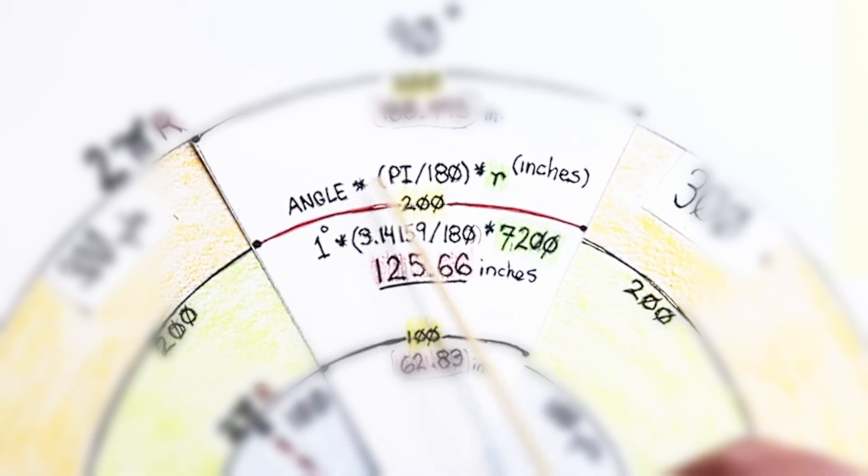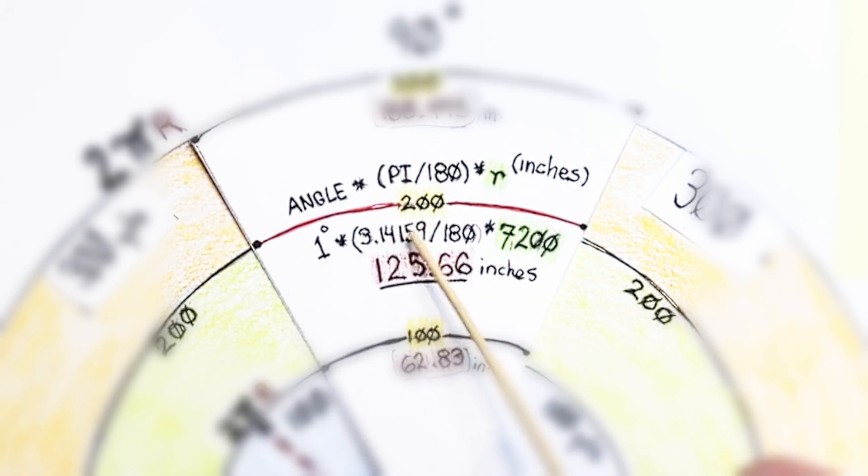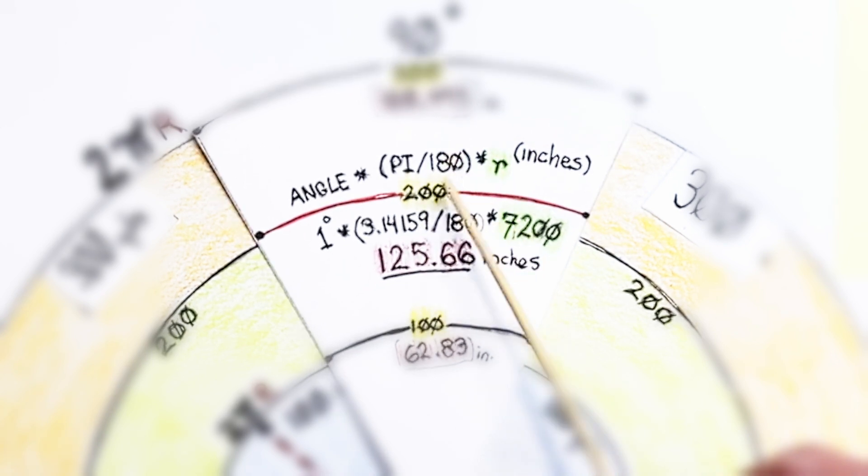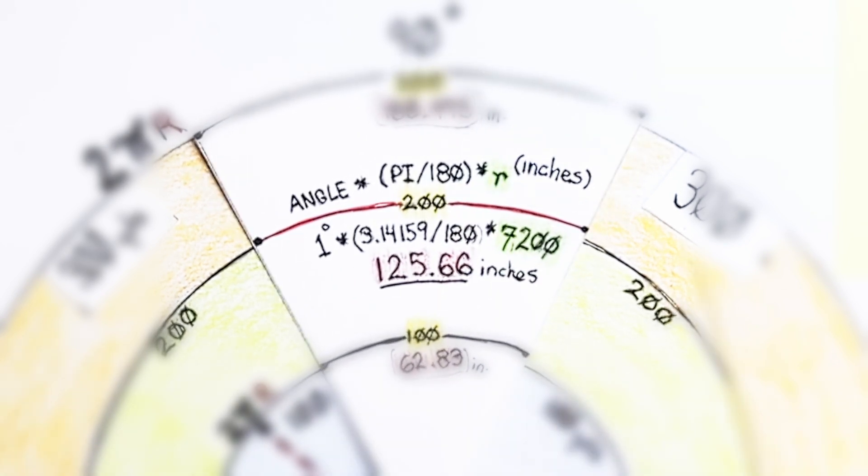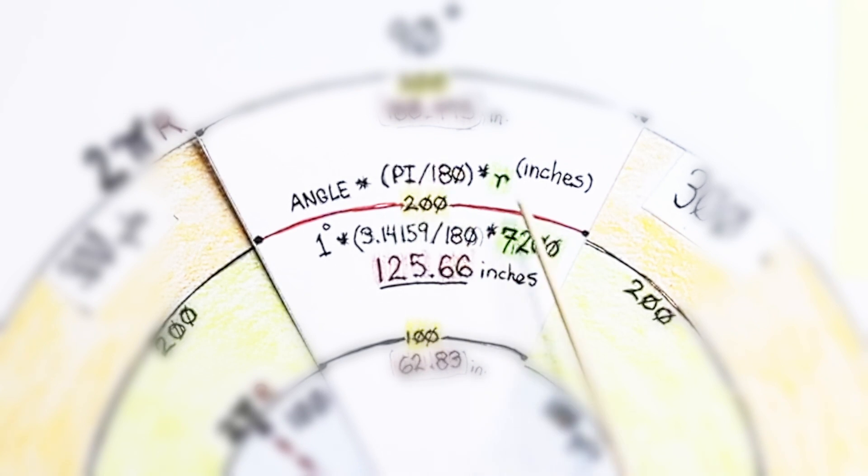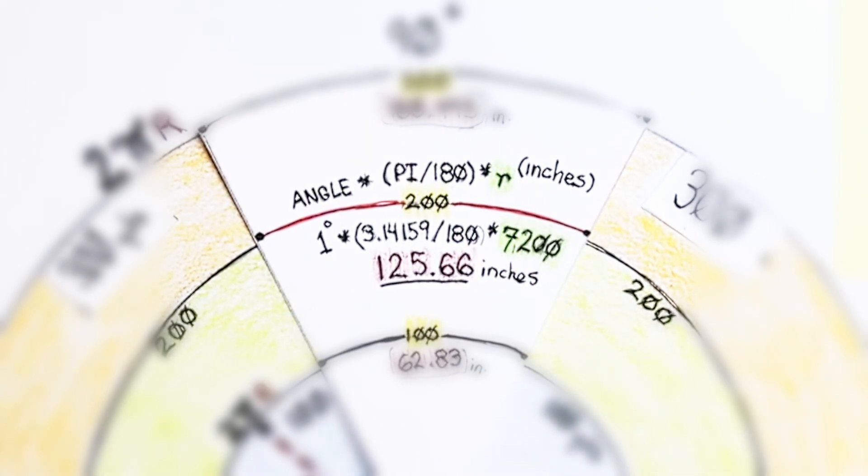And then it's times, and then in parentheses, pi, which is a constant number. It never changes. 3.14159 divided by 180. You take the value of that, and then you multiply it by r. Now, again, this is where r comes in. r is the only thing that really changes.